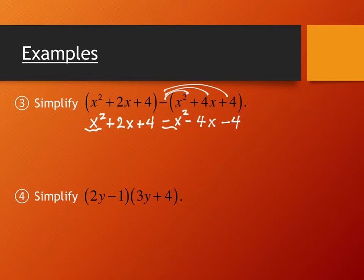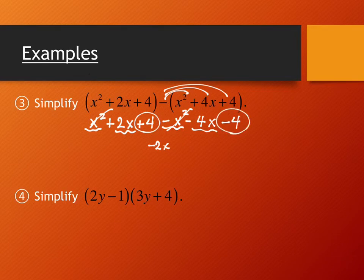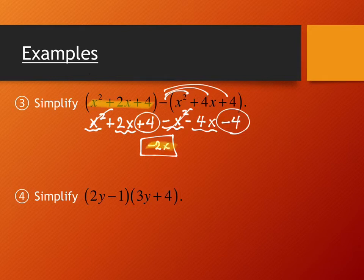Now we combine like terms. I have x squared and negative x squared — those add to zero. I have positive two x and negative four x — that's negative two x. I have positive four and negative four — they cancel to zero. So this collapses all the way down to negative two x, which is a monomial — just one term. The original trinomial with three terms became a monomial.